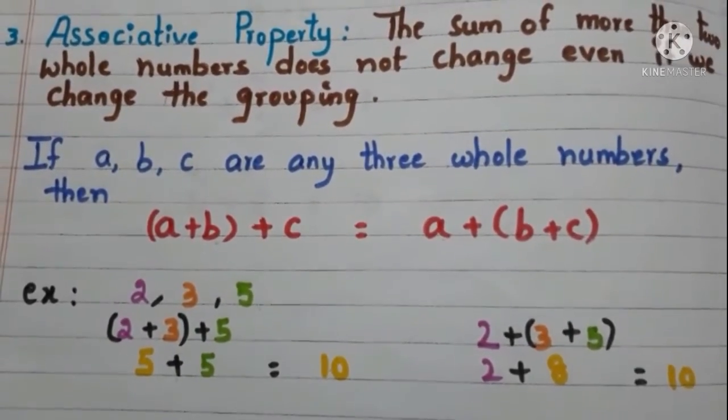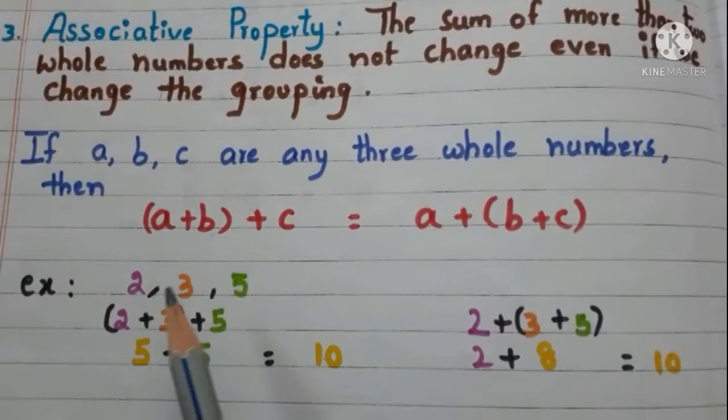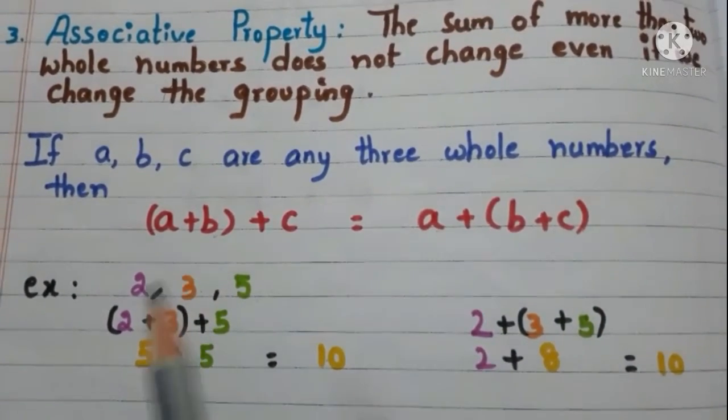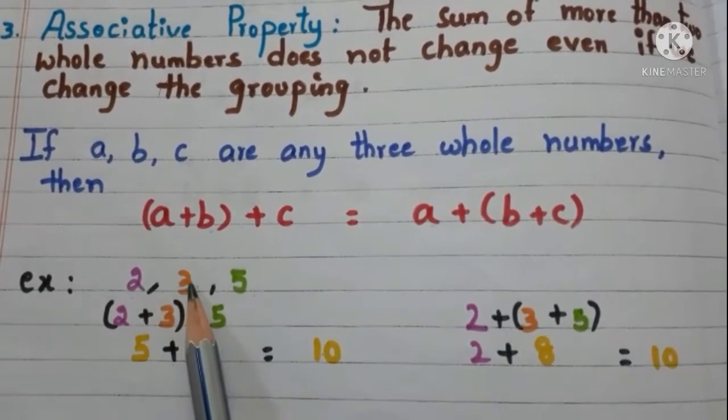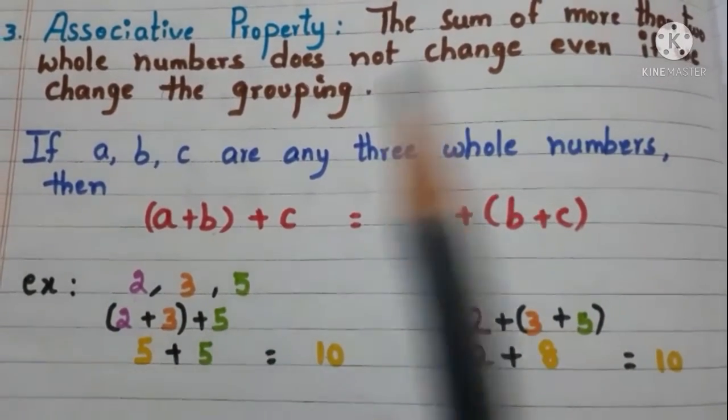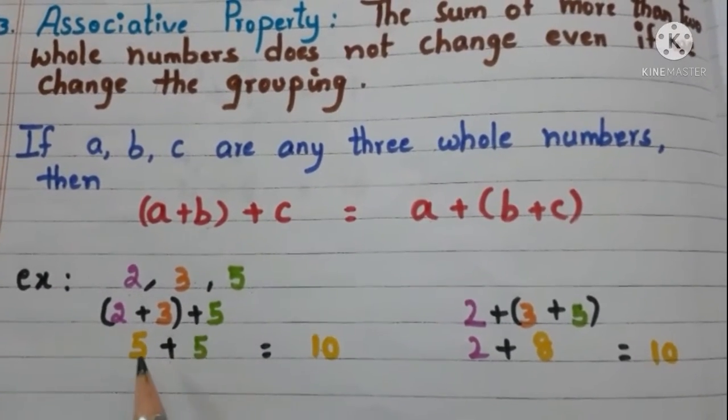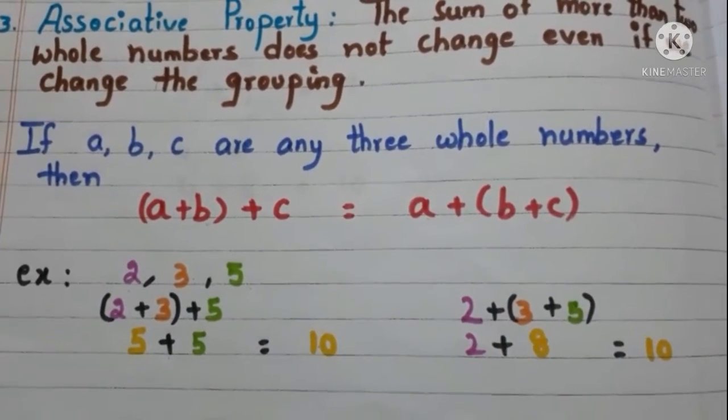Take the whole numbers 2, 3 and 5. First add 2 and 3 then add 5. See here 2 plus 3 is 5. Plus 5. 5 plus 5 is how much? 10.